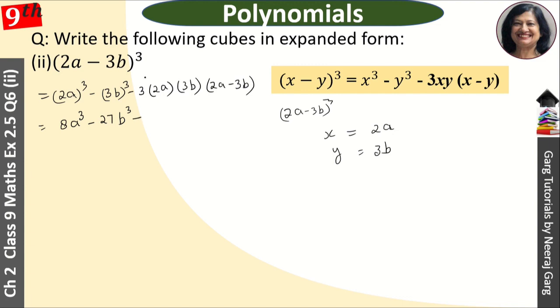Then 8a³ minus 27b³. Now we will open the bracket.